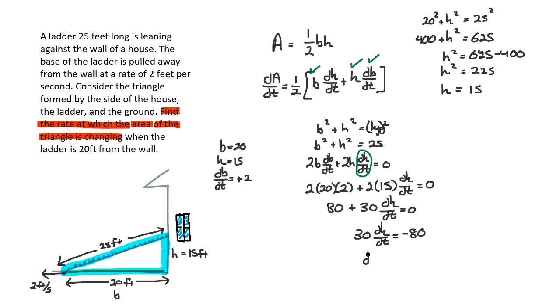I will divide both sides by 30, and I'll have my number for dh/dt, which is, a second here, just about 2.67, actually negative 2.67 feet per second.